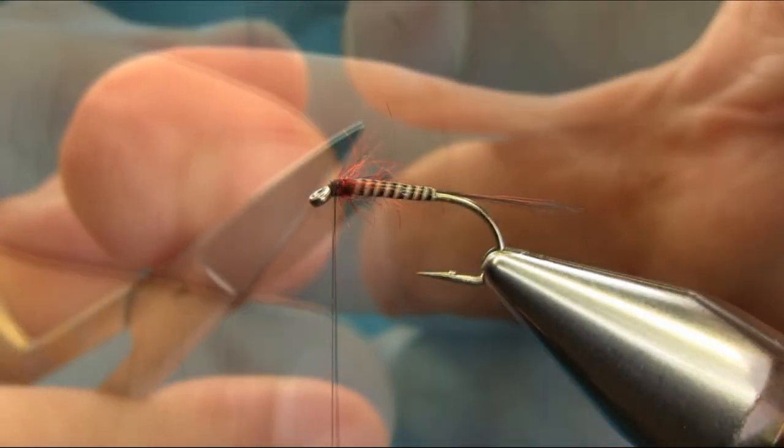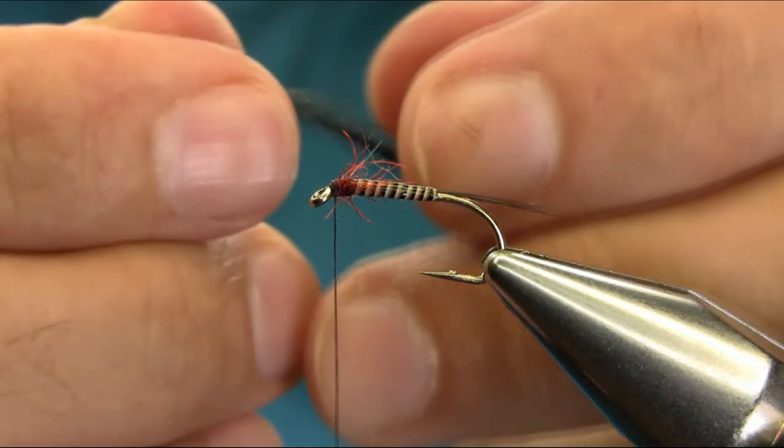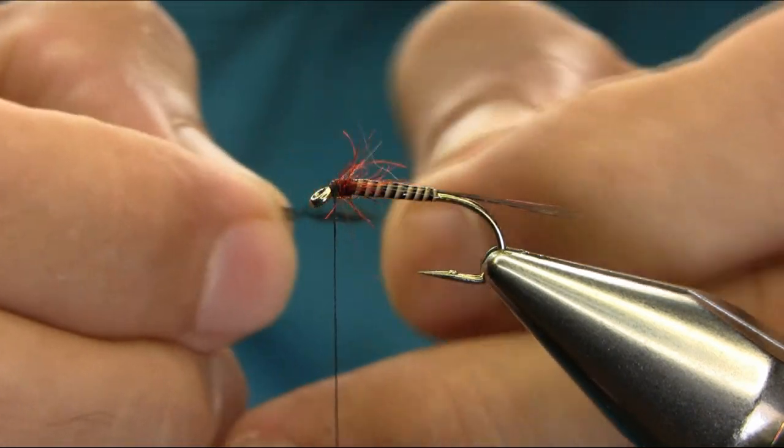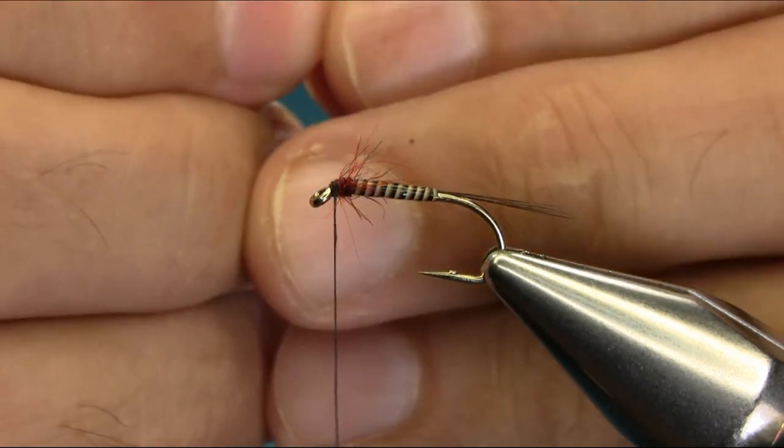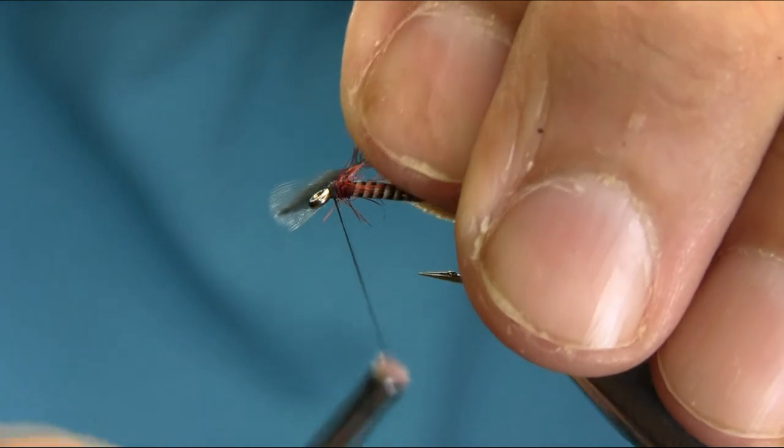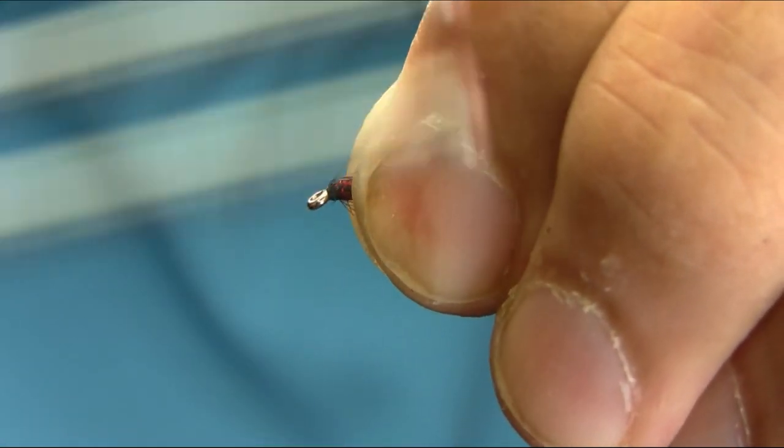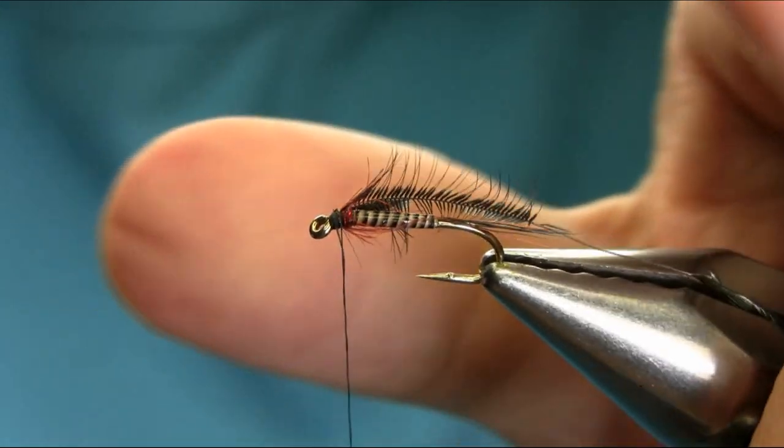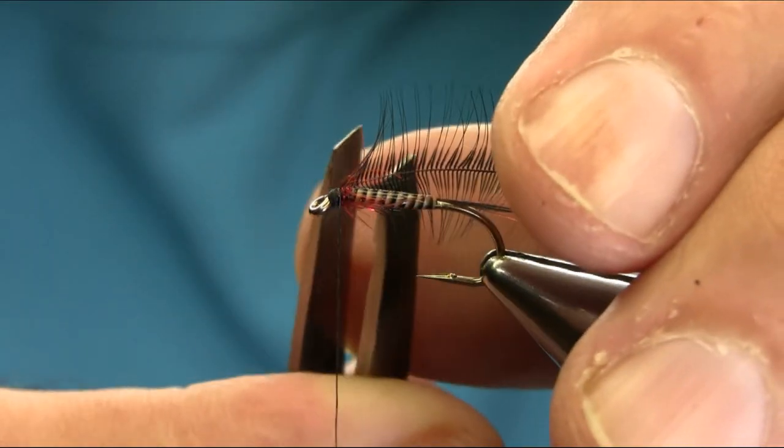Right, I'm using this hackle. This is a hen hackle black color for the head. So just catch it from this tip here. Create a little catching point. Couple of turns. And then pull everything back. And if you could just get this extra piece off.